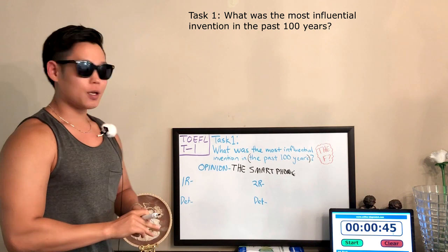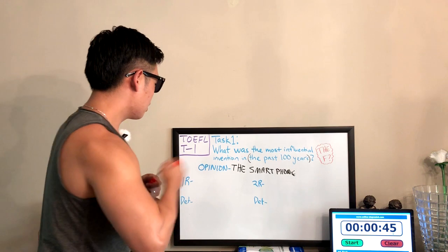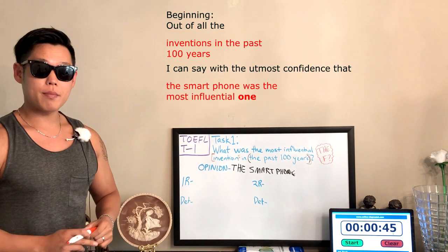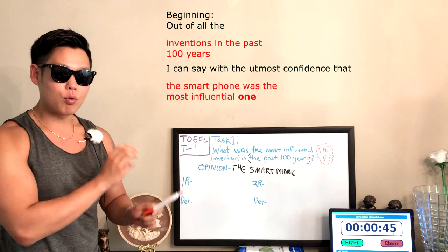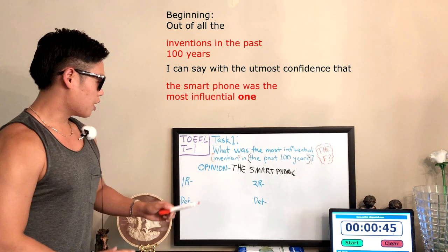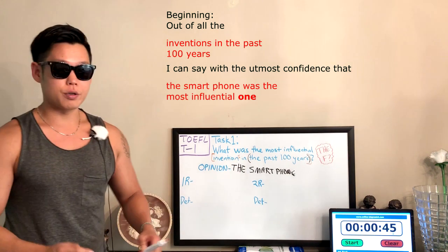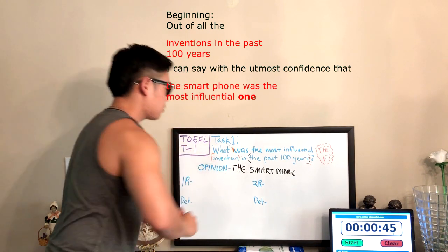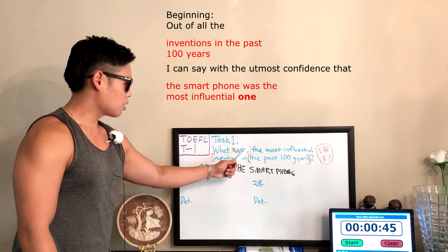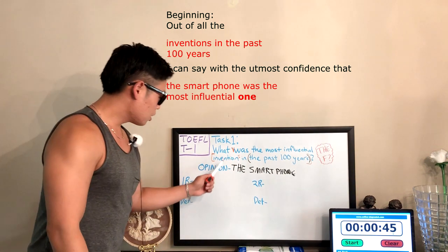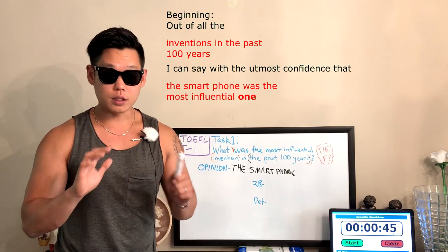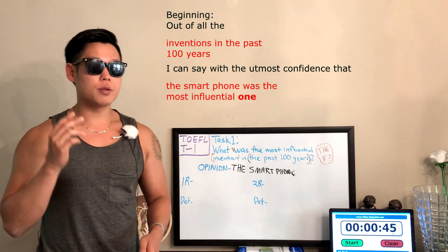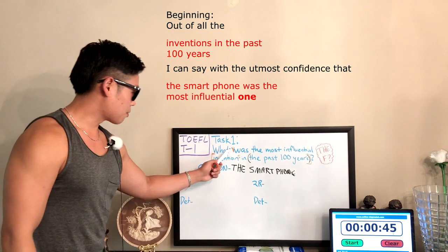Opinion. Anyway, beginning sentence is what we can do. Okay, now I'll grab out of all the top open space: out of all the inventions in the past 100 years. So, 저번에 말한 대로, 질문만 잘 보면 잘 보고 이용하면 beginning sentence는 완벽하게 정리할 수 있을 거예요. Out of all the inventions in the past 100 years - 그 복수 형태로 바꾸는 거 절대 까먹지 마세요 - I can say with the utmost confidence that - 이제 우리의 opinion은 여기에 끼면 돼요 - the smartphone was the most influential one.